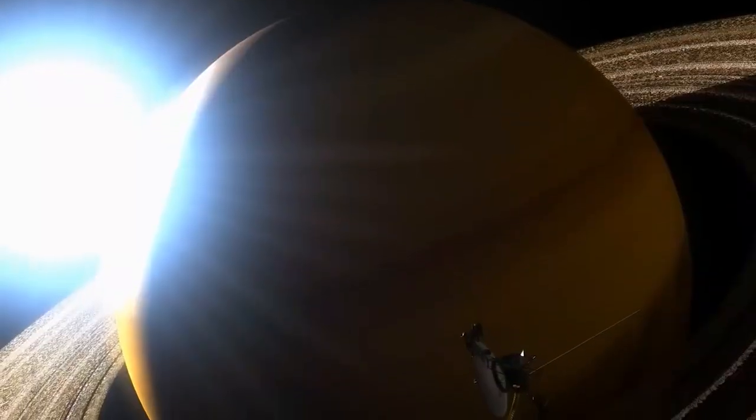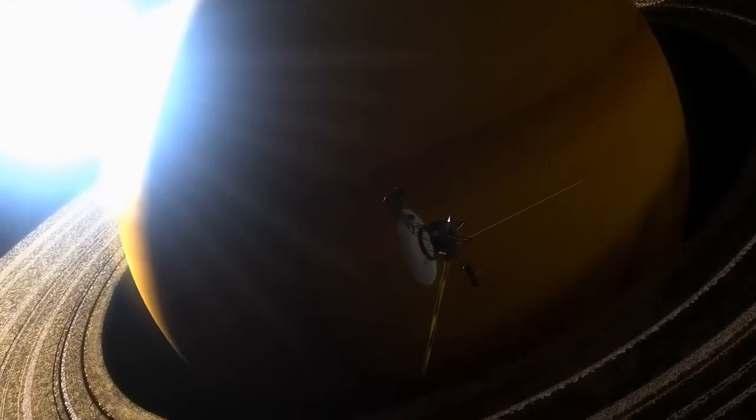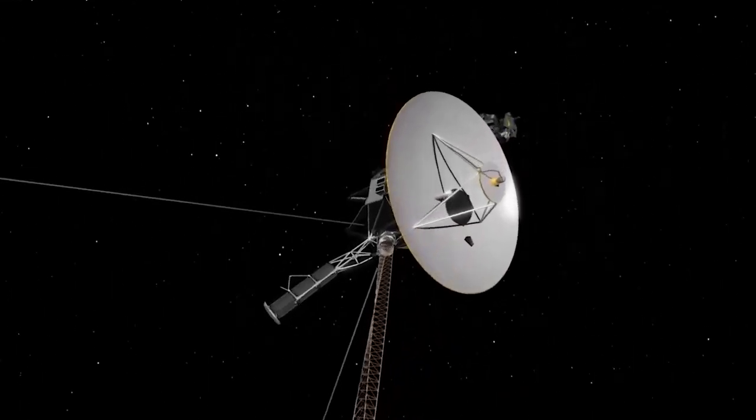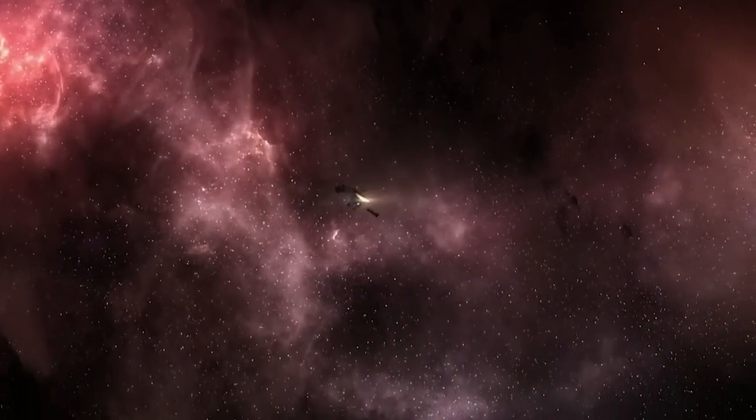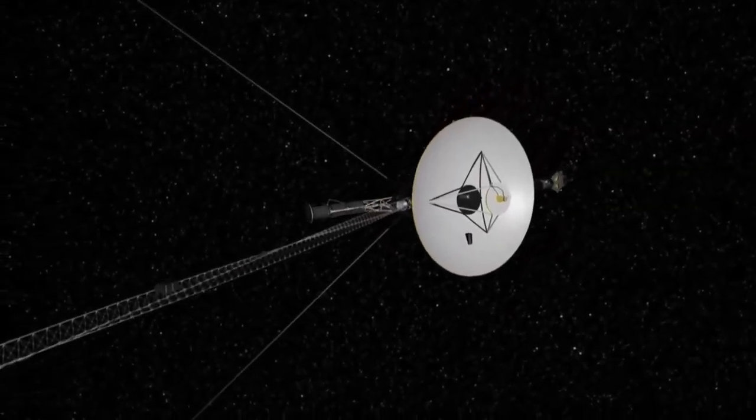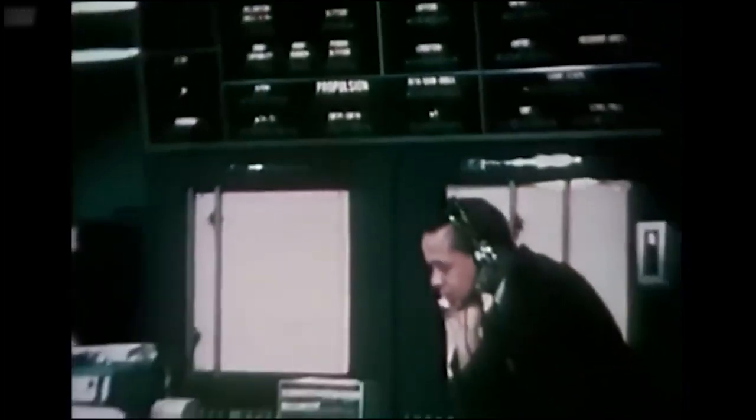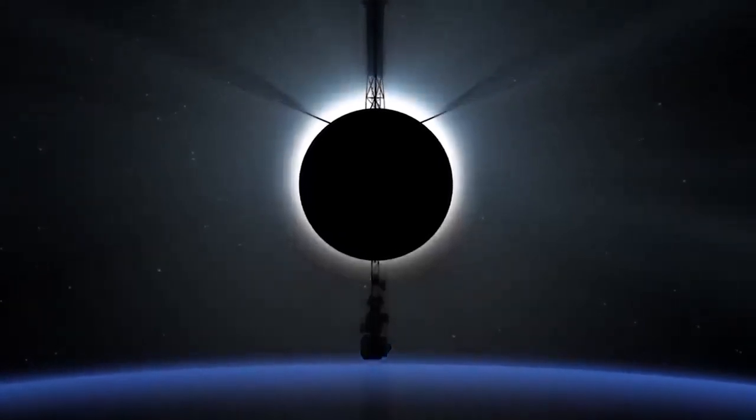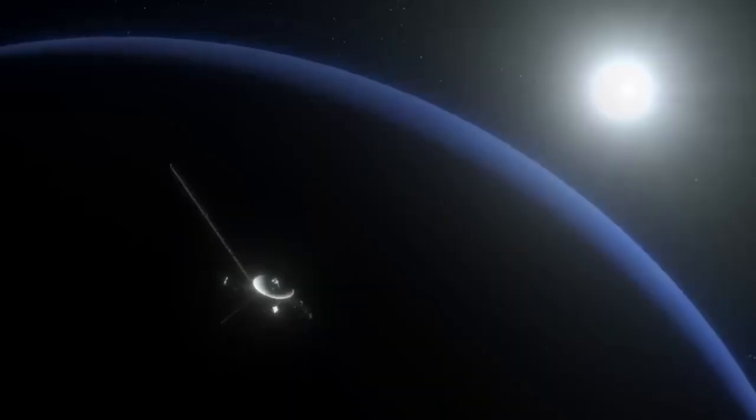To quote NASA's Voyager 1 and 2 project manager Susan Dodd, a conundrum like this is sort of par for the course at this point of the Voyager mission. Both spaceships have been functioning for about 45 years, which is significantly longer than the original mission planners had anticipated. Interstellar space is a high-radiation region where no spacecraft has ever flown, so we have something to contend with as well. Perhaps a new version of the program will fix it. A third option is for the Voyager 1 crew to just adapt.